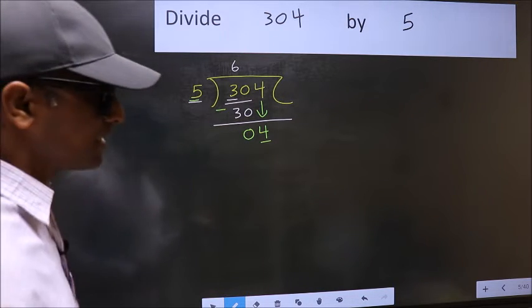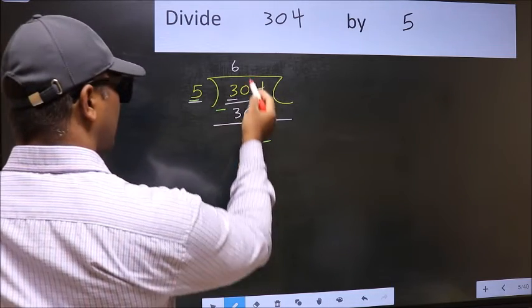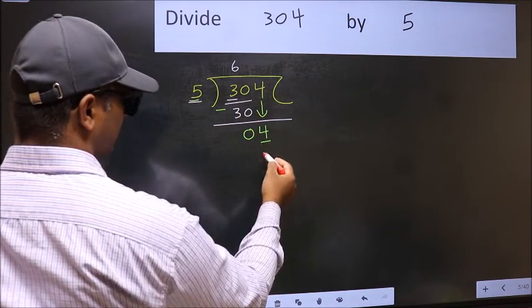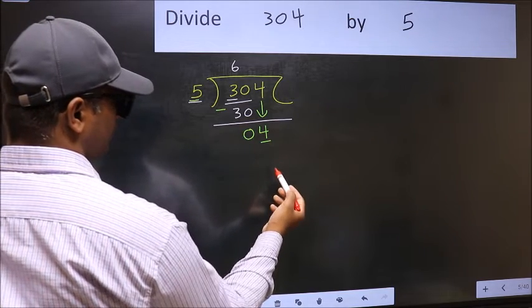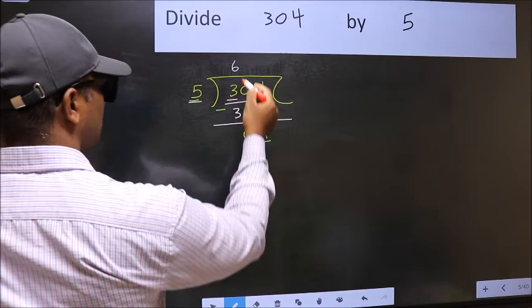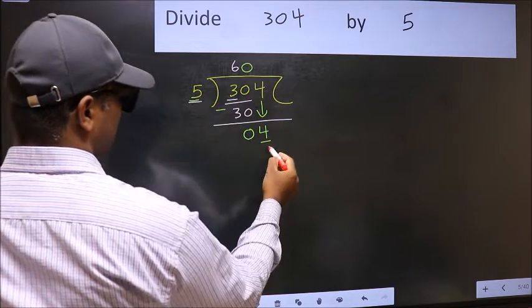Instead, what you should think of doing is: what number should we write here? If I take 1 here, I will get 5. But 5 is larger than 4. So what we should do is take 0. So 5 into 0, 0.